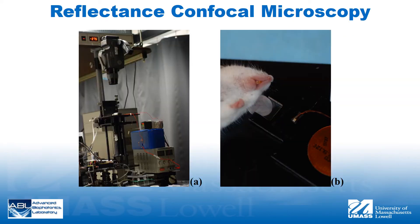To reveal structural and functional changes in the mouse ear during heating, we monitored the heating process using a commercial confocal microscope. Illumination was provided by an 830 nanometer diode laser focused onto the sample by a 20x, 0.75 numerical aperture water immersion objective lens. The imager provided lateral and axial resolution of 1.5 micrometers and 5 micrometers respectively, with an imaging depth of approximately 50 micrometers and a field of view of 800 by 600 micrometers squared.